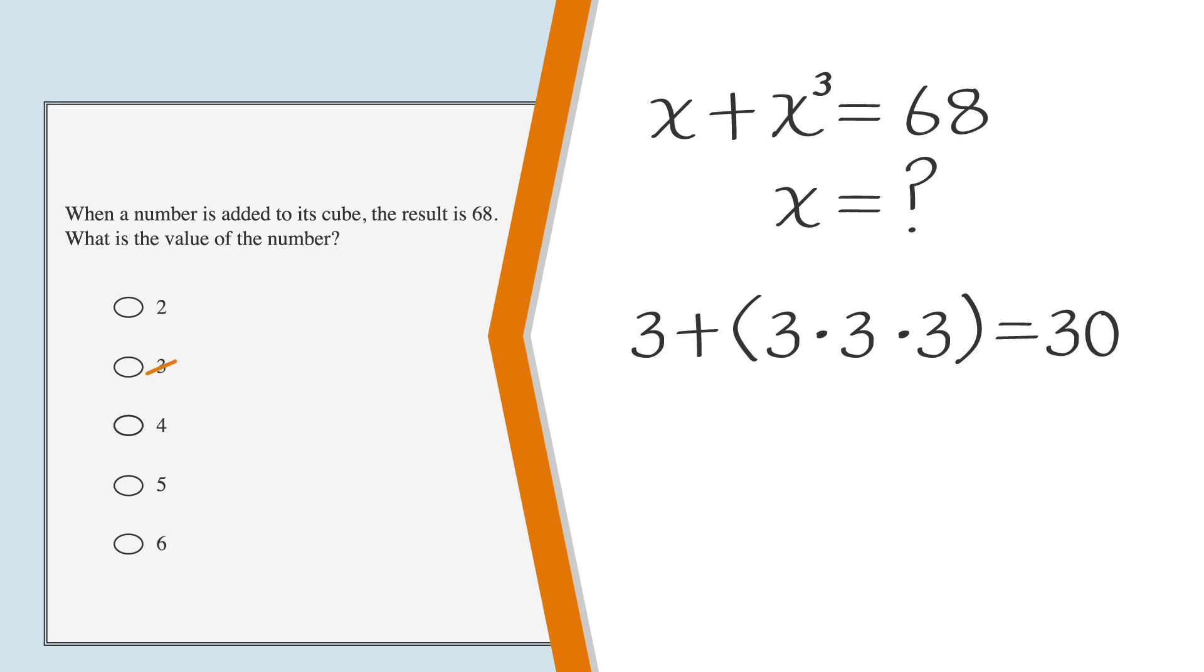Cross out the second answer choice as an option. The correct answer needs to be a larger number, as we need a total of 68. So we can also cross out 2, as this would yield a number smaller than 30. Moving on to step 2.